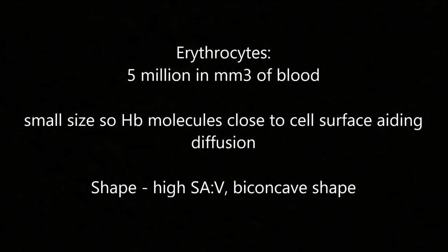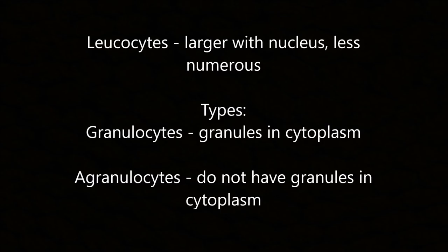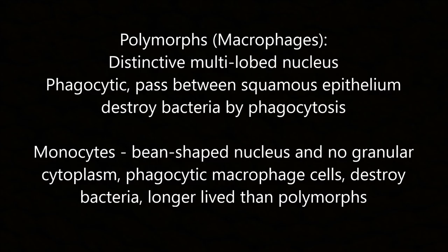Erythrocytes: there are 5 million per mm³ of blood. Their small size means haemoglobin molecules are close to the cell surface, aiding diffusion. Their biconcave shape gives a high surface area to volume ratio. Leukocytes are larger, have a nucleus, and are less numerous. Types include granulocytes, which have granules in the cytoplasm, and agranulocytes, which do not.